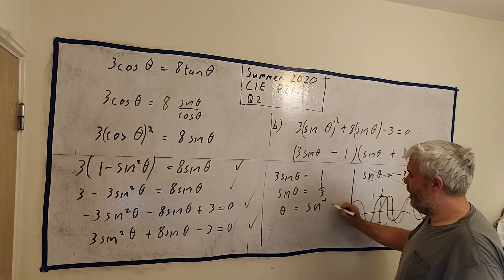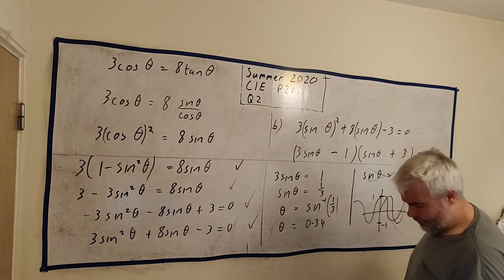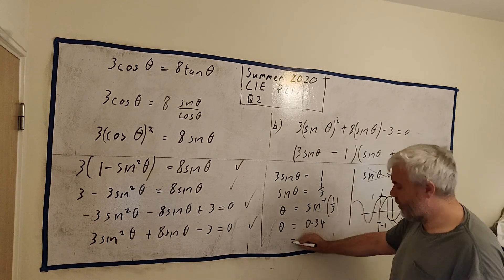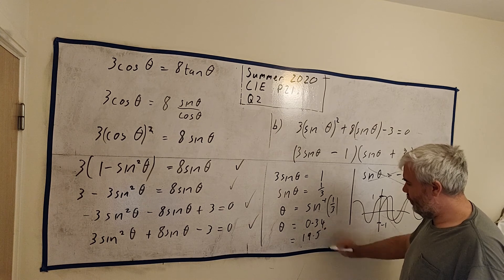The answer is over here, then. 3 sine theta is equal to 1. Sine theta is equal to 1 over 3. Theta, then, is equal to the inverse of sine 1 over 3. This is just on a calculator. And you'll get an answer I've done here. Is your calculator in radians? Your answer will come out as 0.34. And if your calculator is in degrees, it will come out as 19.5 degrees.